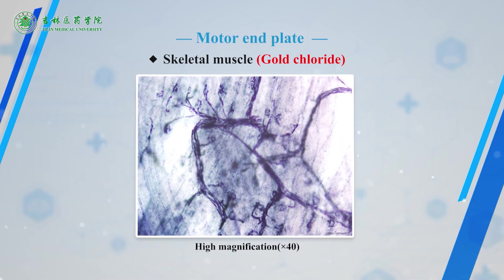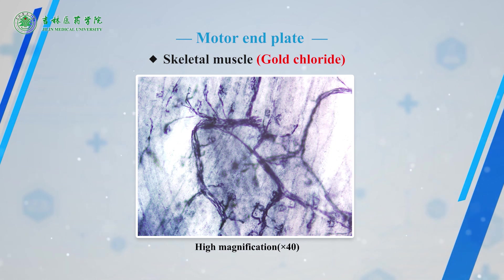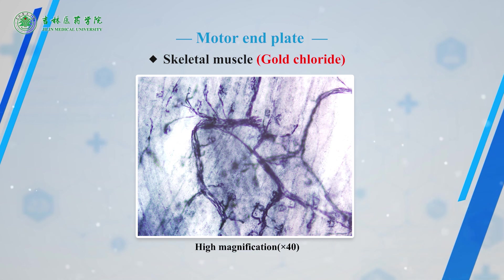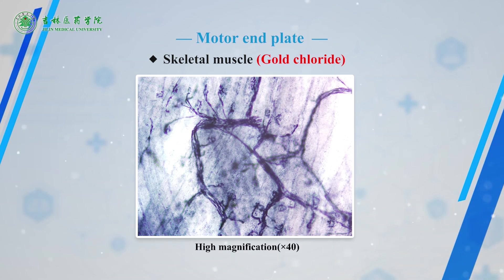The last slide is motor end plate. The skeletal muscle fibers are stained blue, while nerve fibers are stained deep blue or black. The nerve fibers branch into many branches. The terminal branches of the axon end in pole-like expansions which attach to the surface of skeletal muscle, forming the motor end plate.